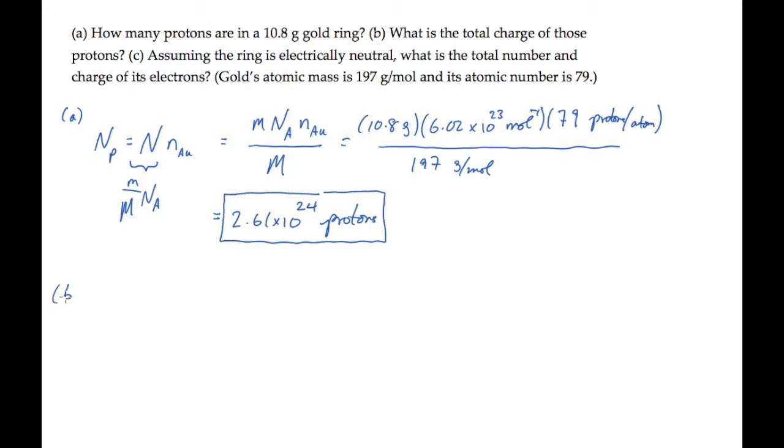Part B asks for the total charge of all of these protons. That's equal to the number of protons times the proton charge. That's the elementary charge, E, 1.602 times 10 to the minus 19 Coulombs. So the total charge on the protons works out to this value.